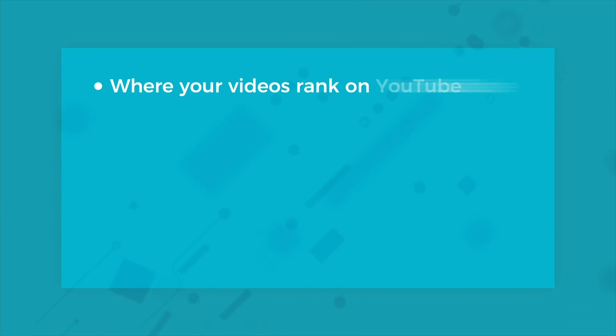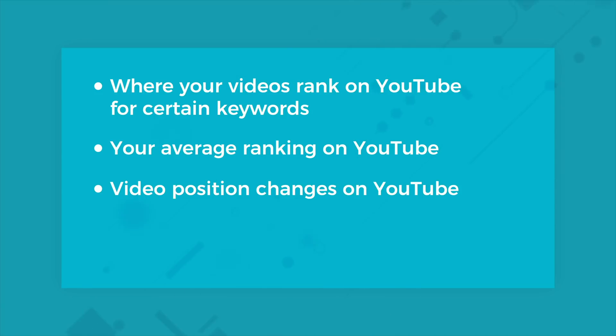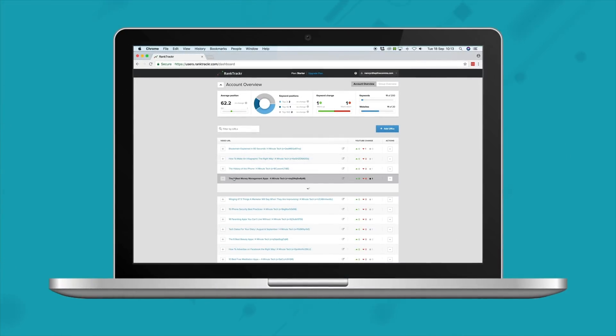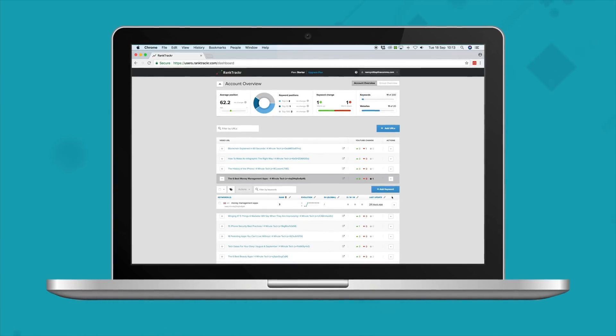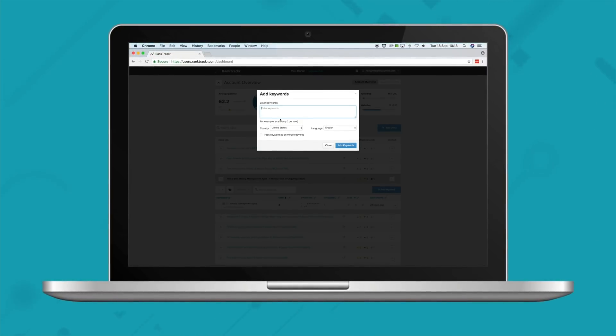Another great tool to use once your video is already live is Rank Tracker. This tool allows you to see where your videos rank on YouTube for certain keywords, your average ranking on YouTube, and your video position changes on YouTube. This is a great tool to use if you're reporting back to someone on video performance — it's real proof of what's working and what isn't when it comes to organic rankings.